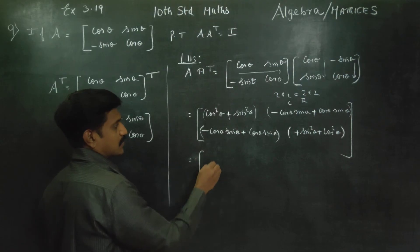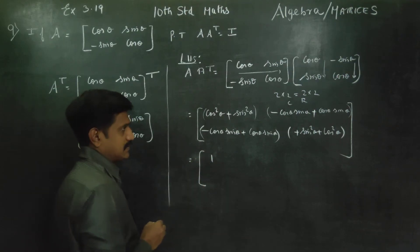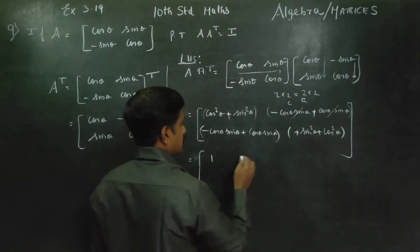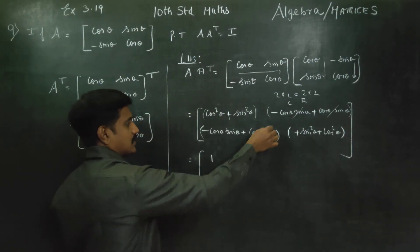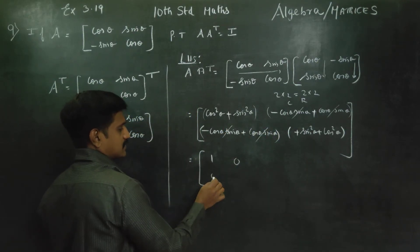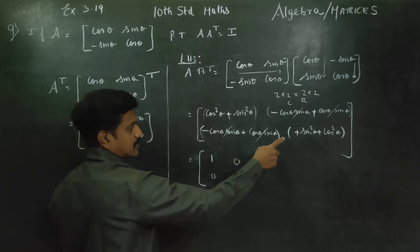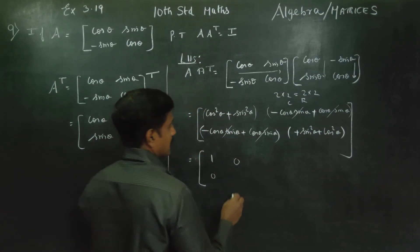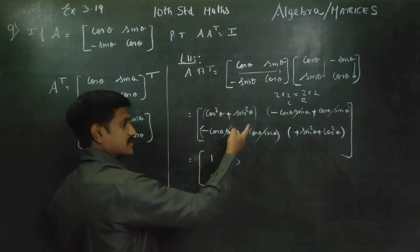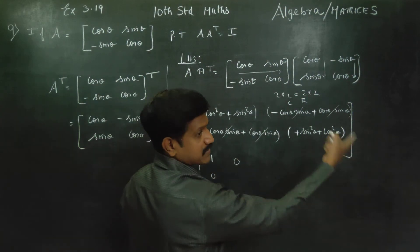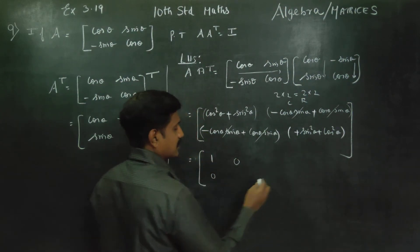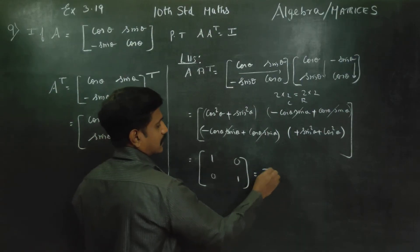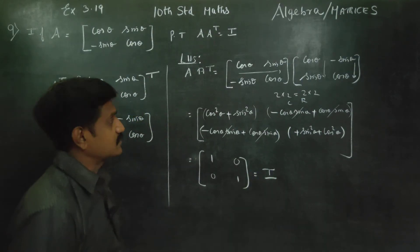For the diagonal elements, cos square theta plus sin square theta equals 1 by the trigonometric identity. The off-diagonal terms cancel and equal 0. So sin square theta plus cos square theta equals 1, and the off-diagonal elements are 0.